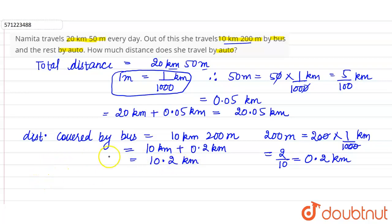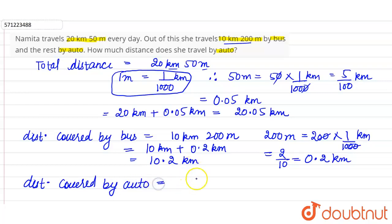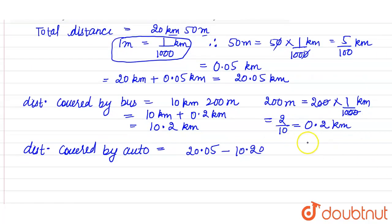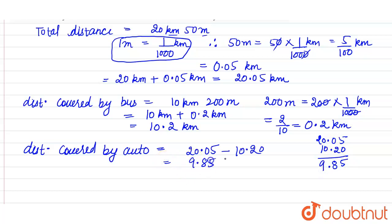The rest of the distance is covered by auto. To find the distance covered by auto, we subtract the distance covered by bus from the total distance. Total distance is 20.05 kilometers minus 10.20 kilometers. So 20.05 − 10.20 = 9.85 kilometers. This is the required answer.